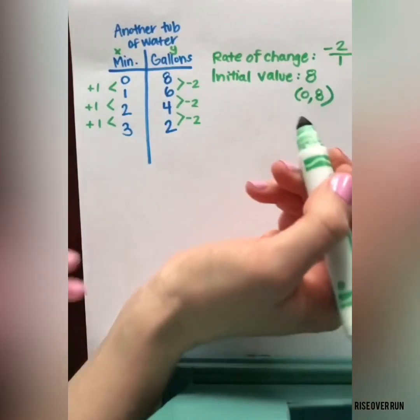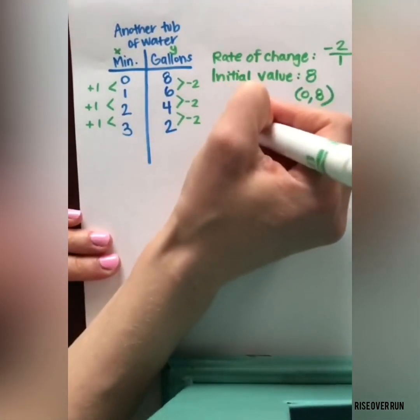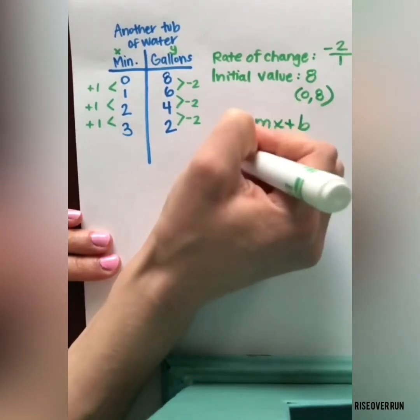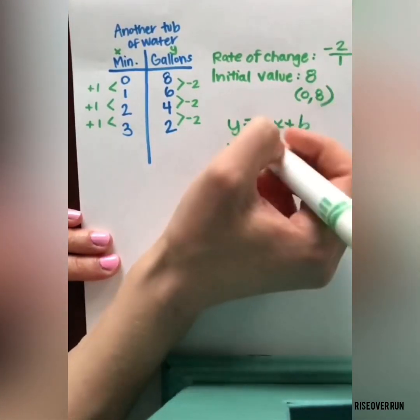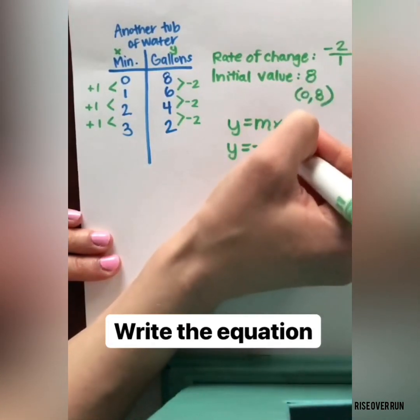Now that we have this information, we can write an equation for this relationship using the format y equals mx plus b. m is our rate of change or slope. And b is the y-intercept.